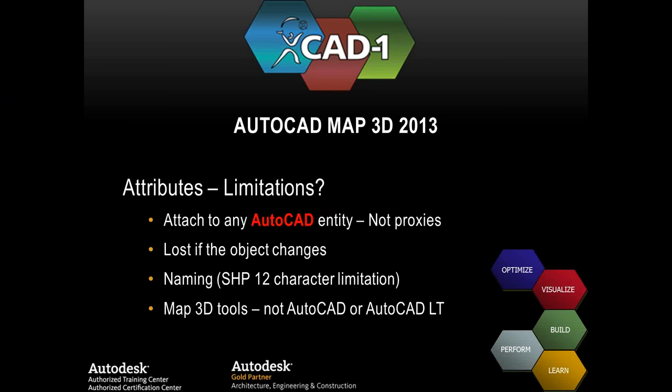The 12-character limit only applies to the name of the table or attribute — not the values. Values can have as many characters as you want. Also, these are map tools, not AutoCAD tools and not AutoCAD LT tools. So what happens when someone with plain AutoCAD or AutoCAD LT gets your drawing? They will not see the object data tables. You have to have Map 3D or Civil 3D to see the object data tables and values. Even though they can't see them, the information is still embedded in the object as long as they don't explode or join things.